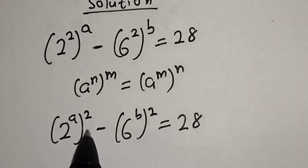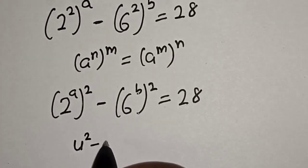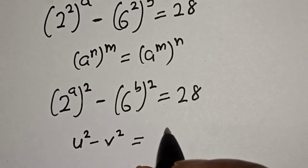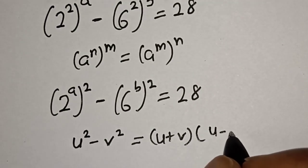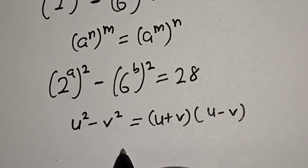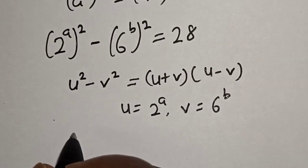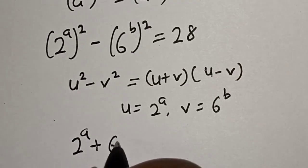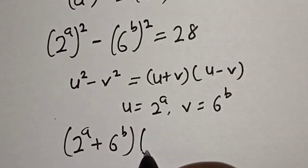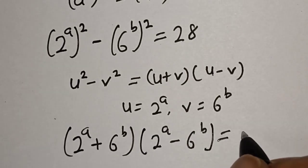If you look at this carefully, this is a difference of squares. If you have u squared minus v squared, this equals u plus v multiplied by u minus v. In this case, u is equal to 2 to the power of a and v is equal to 6 to the power of b. Substituting, we have 2 to the power of a plus 6 to the power of b, times 2 to the power of a minus 6 to the power of b, equal to 28.